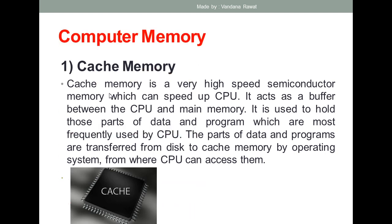First, cache memory. Cache memory is a very high-speed semiconductor memory. Among the three types — cache, primary, and secondary — cache memory is the fastest. It can speed up the CPU and acts as a buffer between the CPU and the main memory. It is used to hold those parts of data and programs which are most frequently used by the CPU.